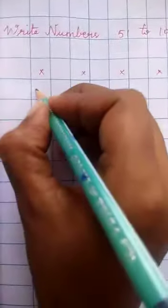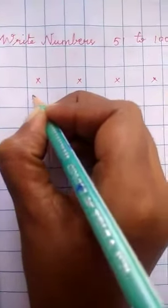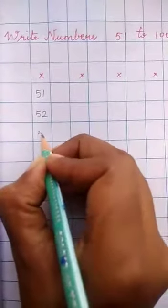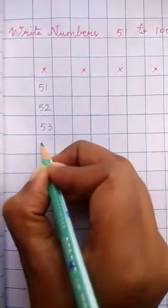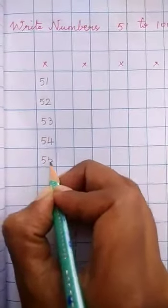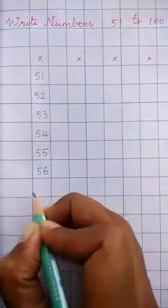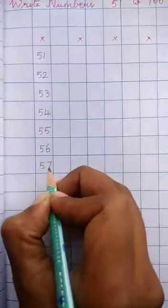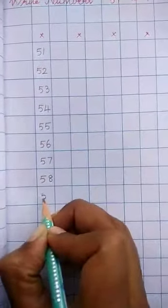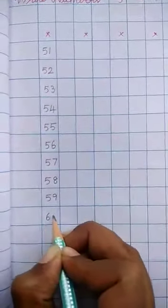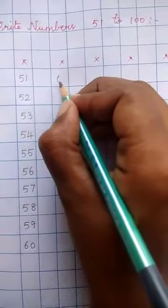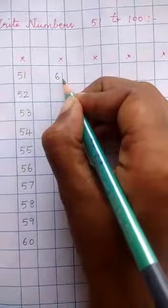Let's start children, right from 51. 51, 52, 53, 54, 55, 56, 57, 58, 59, 60. Then 60 after 61.